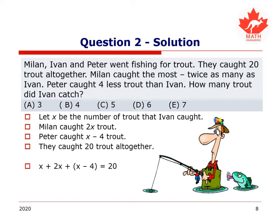And we are told that they got 20 trout altogether. Let's put all this into one equation. We know that x, how much Ivan caught, plus 2x, how much Milan caught, plus x minus 4, what Peter caught, equals 20. Can we isolate for x? Sure we can. First, those brackets are not really doing anything. Next, we have x plus 2x plus x, 4x altogether, minus 4 equals 20.